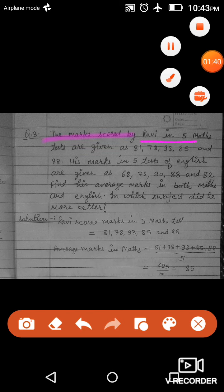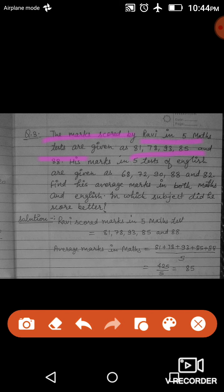Question number three: The marks scored by Ravi in five maths tests are given: 81, 78, 93, 85, and 88. His marks in five tests of English are given as 68, 72, 90, 88, and 82. Find his average marks in both maths and English. In which subject did he score better?